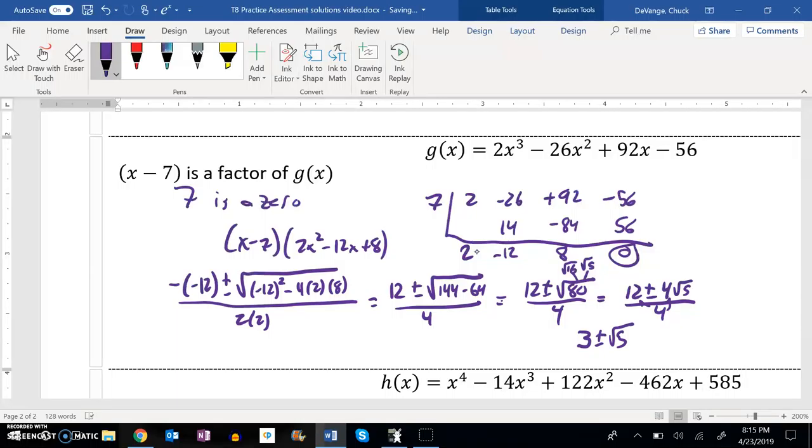So 3 plus root 5 and 3 minus root 5 and 7. So my zeros are 7, 3 plus root 5, and 3 minus root 5.